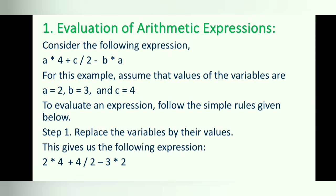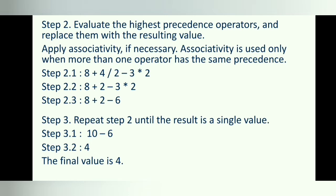Step 2: evaluate the highest precedence operators and replace them with the resulting value, applying associativity if necessary. Associativity is used only when more than one operator has the same precedence. In this example, the operators with highest precedence are multiplication and division — they both have the same level of precedence, so associativity is applied. Their associativity is left to right, meaning the operator on the left is evaluated first, then the operator on its right, and so on.